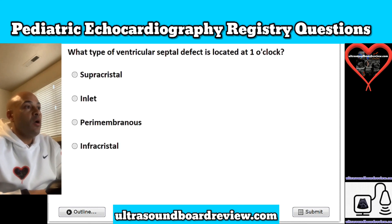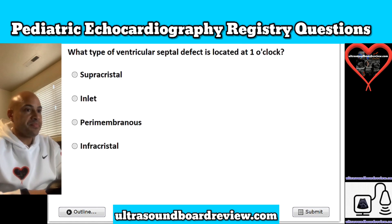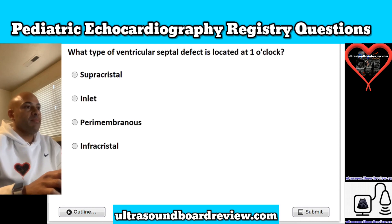Question 18. What type of ventricular septal defect is located at one o'clock? Is it A, supracristal; B, inlet; C, perimembranous; or is it D, infracristal? The answer is A, supracristal.